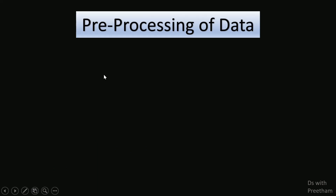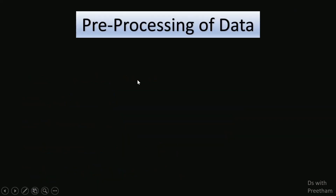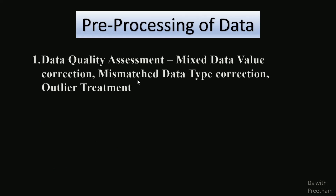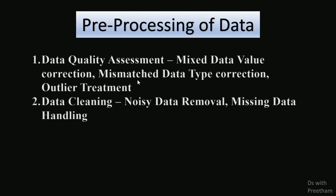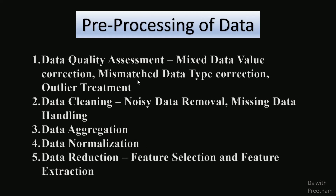For poor quality of data, we do pre-processing first. We check data quality, types, outliers, and mismatched data. We do data cleaning — handling noise data, missing data, duplicates, and data aggregation. We also do data normalization, data reduction, feature selection, and feature extraction.